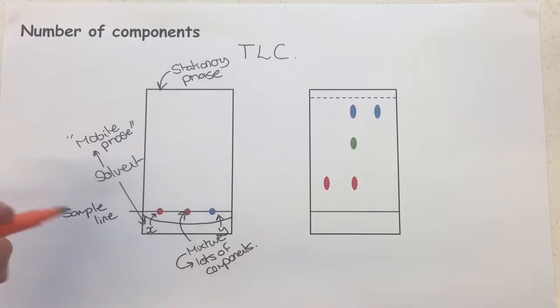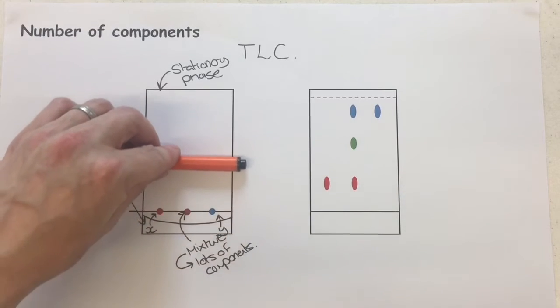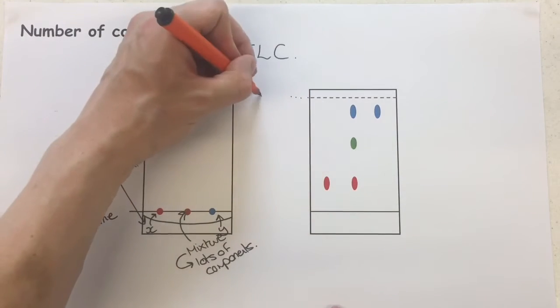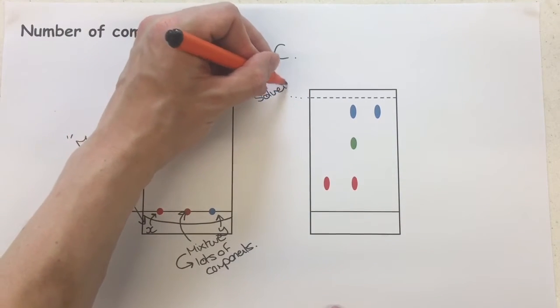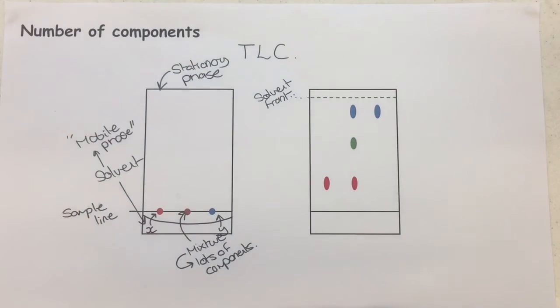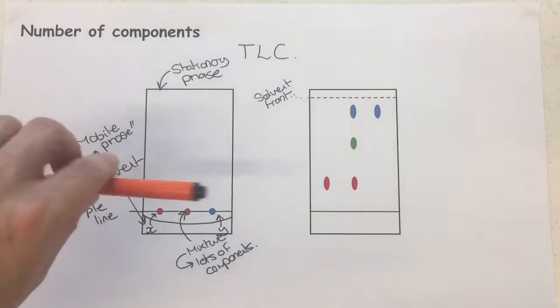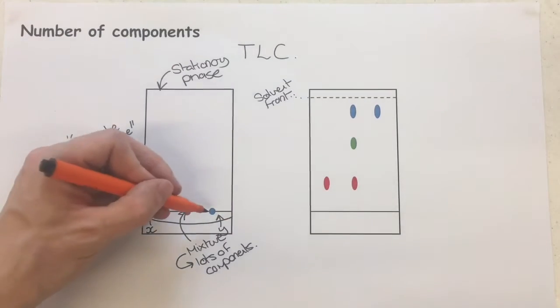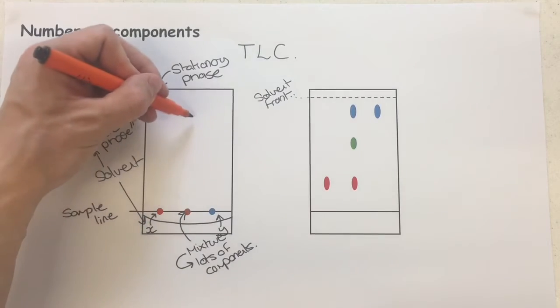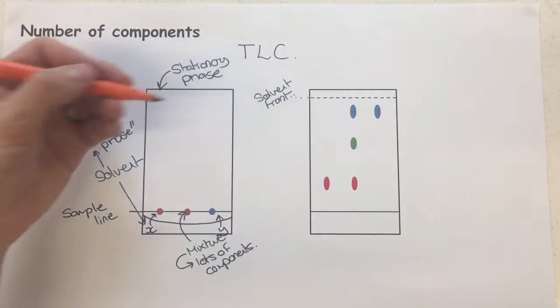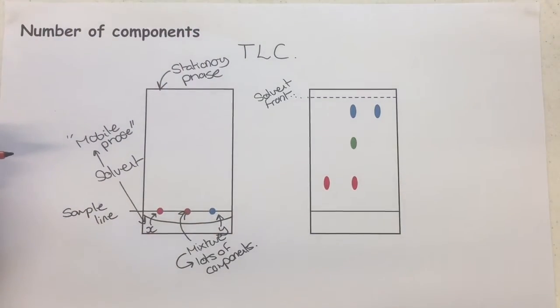So we've got stationary phase, mobile phase. What's going to happen is the solvent is going to absorb up all the way up to here. That is going to be the solvent front. It's essentially how far the solvent is allowed to travel before we take the plate out. Depending on two main factors, we're going to see that these spots separate out along with the movement of the solvent through the paper or across the TLC plate.